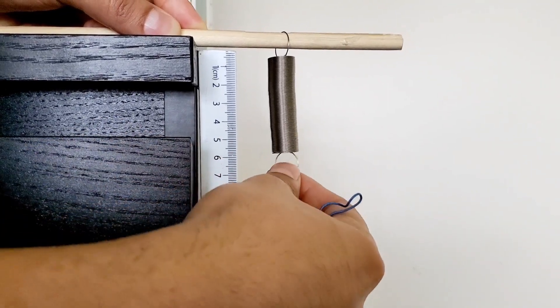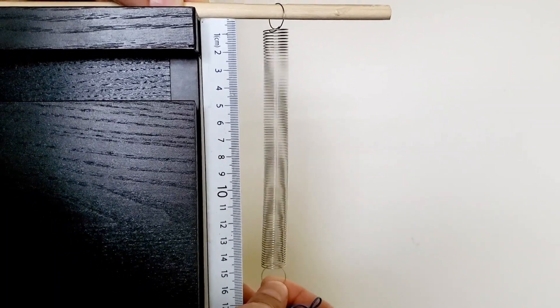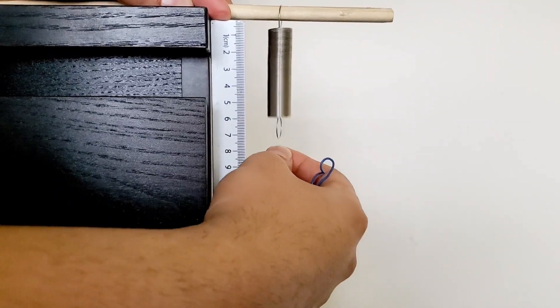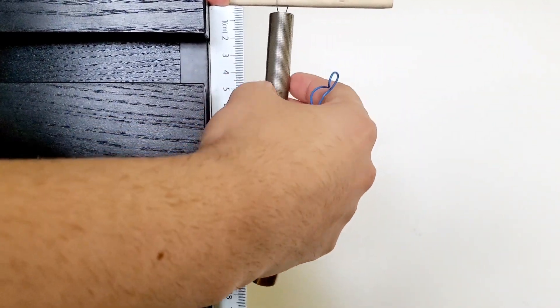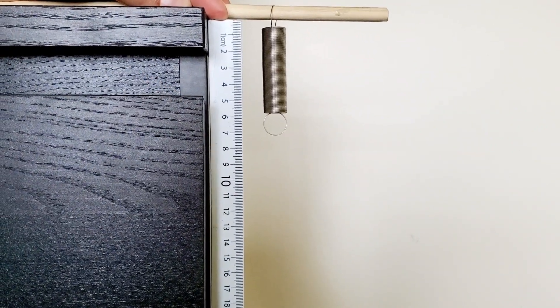So that way, every time we stretch it, you can look at the center point and see where that displacement is going to be relative to the ruler here. All right, so go ahead and take a second to record the value for the displacement when it's unstretched.